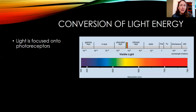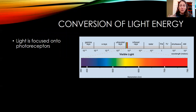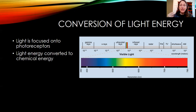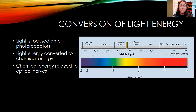So how do these eyes convert light energy? Light comes in as full-spectrum light, possibly at the surface of water, or different spectra if they're underwater. That light is focused into photoreceptors, where the light energy is converted into chemical energy.